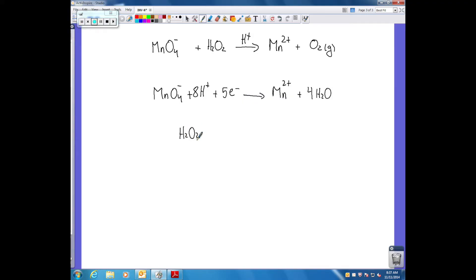The second half reaction is hydrogen peroxide giving oxygen gas. To balance hydrogen we add two protons and to balance electrons we add two electrons.